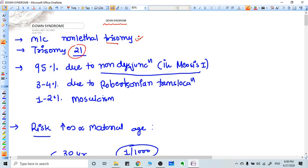95 percent of trisomy 21 is because of non-disjunction in meiosis one. Other three to four percent are due to Robertsonian translocation, and the rest one to two percent are due to mosaicism.